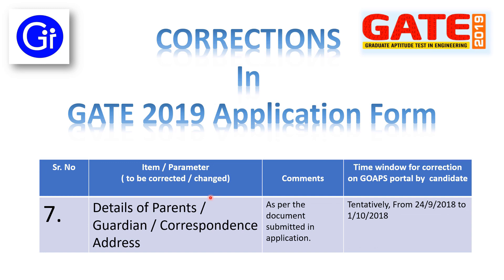The seventh parameter to be corrected or changed is details of parents, guardians, and correspondence address. This can be done as per the documents submitted in the application form — documents like your eligibility certificate having your details of parents, guardians, and corresponding address. So as per the certificate or documents, you can make changes or corrections in your details of parents, guardians, and corresponding address. The time window for correction on the GOPS portal by the candidate will be tentatively from 24th September to 1st October.